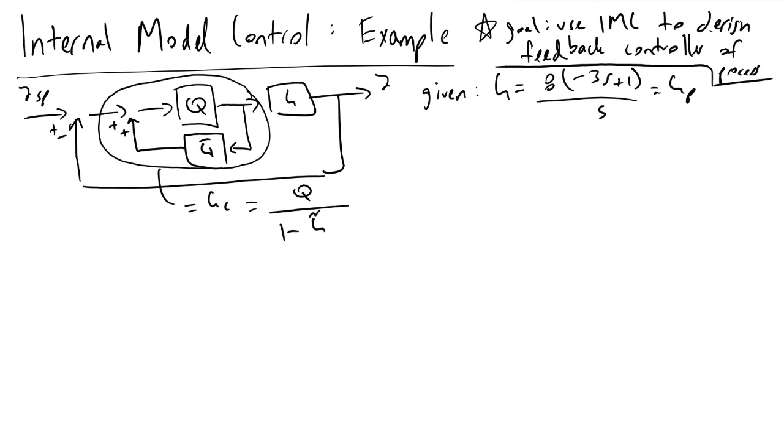where Q is equal to some kind of filter F times G tilde minus inverse. And so G tilde is composed of a stable part, which is G tilde minus,